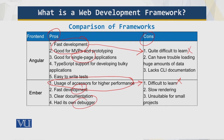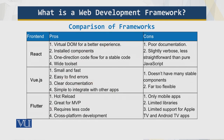Angular has clear documentation, which is a strength. React, on the other hand, has poor documentation, but its strength is a wide toolset making it more flexible and robust for different types of applications. Vue.js is small and fast but is far too flexible, which doesn't work well in practice.